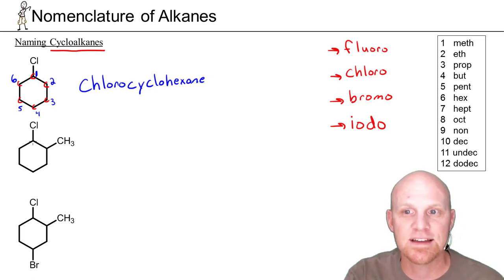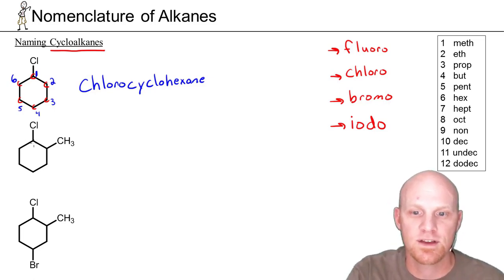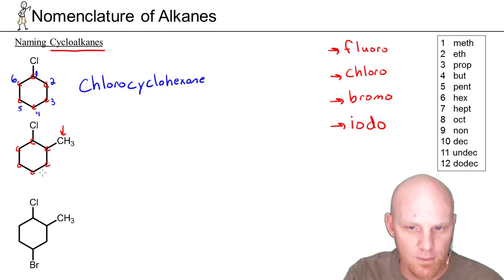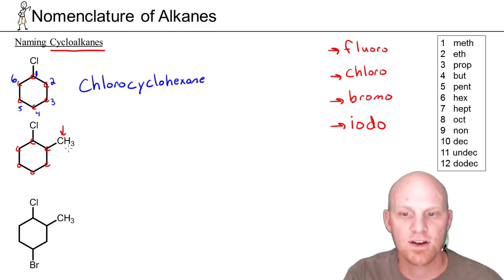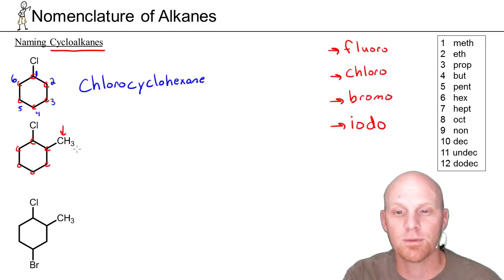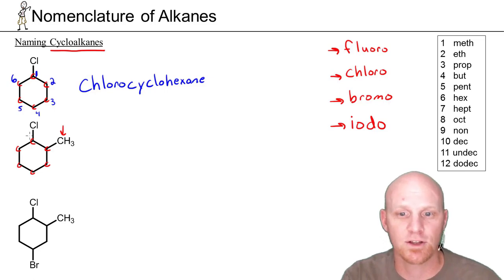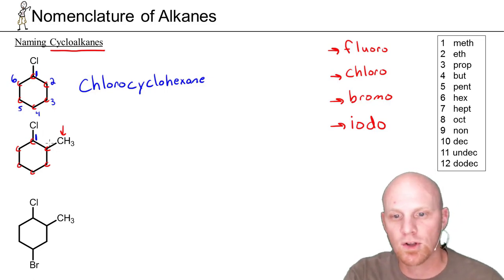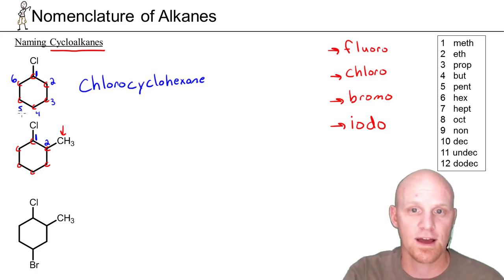The next example is a disubstituted cycloalkane — again a six-carbon ring. We have a carbon not part of the ring in this methyl group, which is only one carbon, so we couldn't try to number through it as part of the chain. Either the ring is the parent chain or what's not part of the ring is — you can't use elements of both. This is cyclohexane again. If we make where the chloro is located number 1 and go clockwise, the methyl group would be at carbon 2.